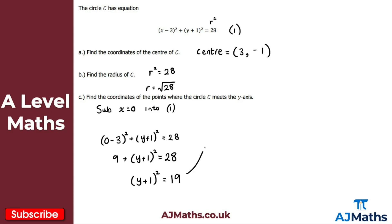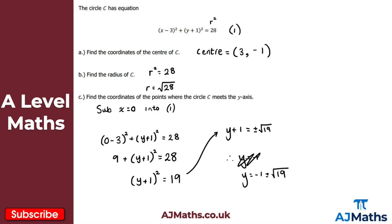Now we want to get rid of the square, so we square root both sides. We need both the positive and negative solution, so y plus one equals plus or minus the square root of 19. Subtracting one from both sides gives y equals minus one plus or minus square root of 19. As actual coordinates, that gives us (0, -1 + √19) and (0, -1 - √19). That's the solution to part C.